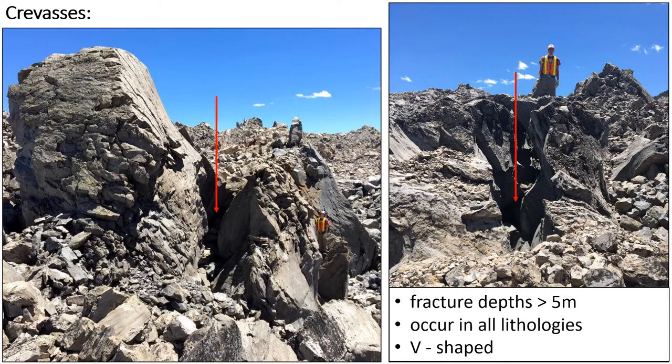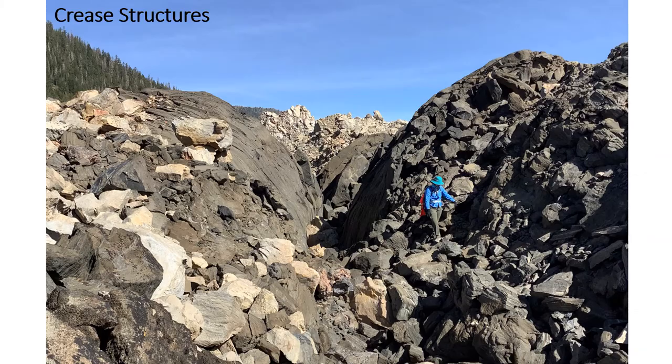Crevasses are one of the largest structures at Obsidian Dome, defined by fracture depths of greater than 5 meters. In the image to the left, our field assistant is standing next to a large crevasse indicated by the red arrow. Like clefts and cracks, crevasses also have a V shape and they occur in all lithologies. In the image to the right, the same field assistant is standing on top looking down into a crevasse indicated by the red arrow. This crevasse actually extended several meters down past the upper surface of the lava, and standing over it you could feel an upwelling of cold air.